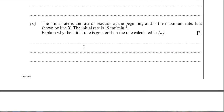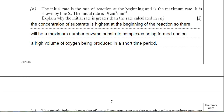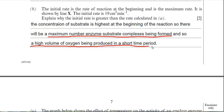The answer is: at the start, you have the maximum concentration of substrate, which means all the active sites are involved in catalysing that substrate into product, giving you the high rate of reaction. I've written: the concentration of substrate is highest at the beginning of the reaction, so there will be a maximum number of enzyme-substrate complexes being formed, and so a high volume of oxygen is produced in a short time period. That should get you two marks.